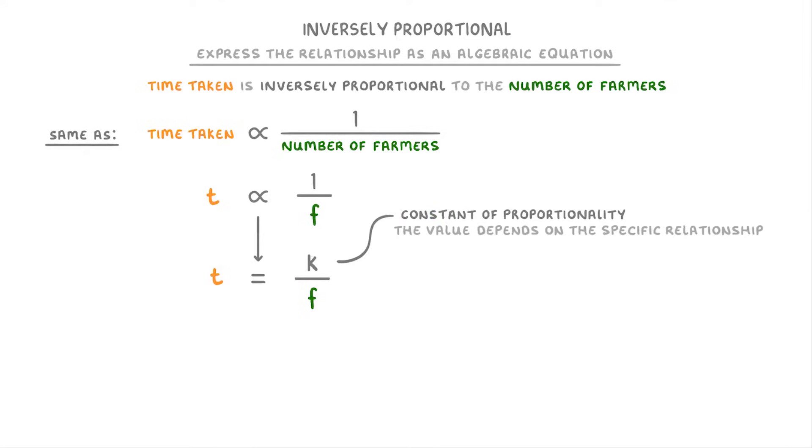Now the particular value of k depends on the specific relationship, so could be anything, like 0.4, 8, or whatever. If we pretend that in this case it was 8 though, then as you can see, we now have an equation that we can use to convert between time taken and the number of farmers.